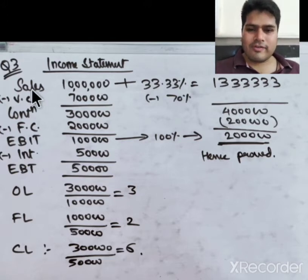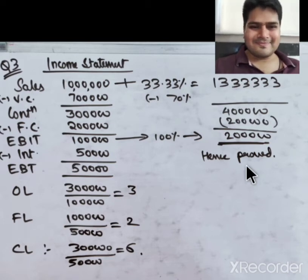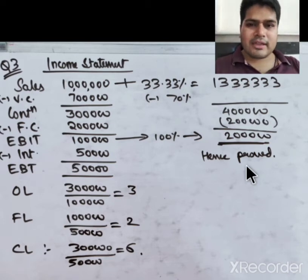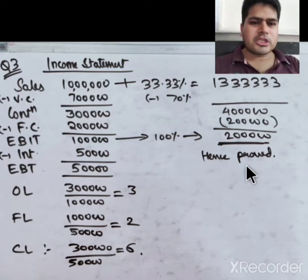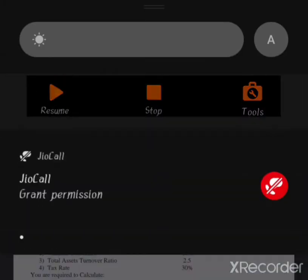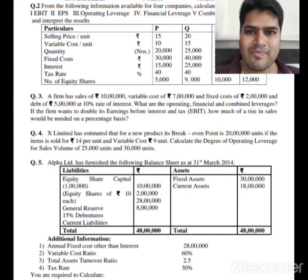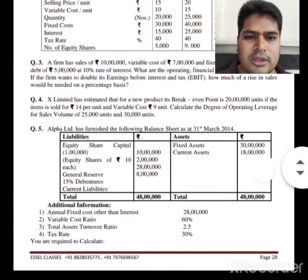Question number 3 is solved. Now let us move to question number 4. X Limited estimates that for a new product, the break-even point is 20,000 units. Selling price is ₹14 per unit and variable cost is ₹9 per unit. Calculate the degree of operating leverage for sales volumes of 25,000 units and 30,000 units.